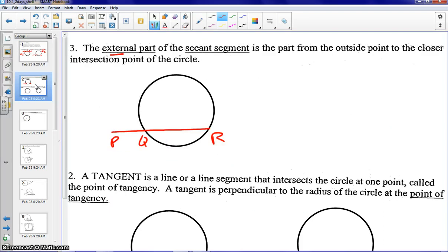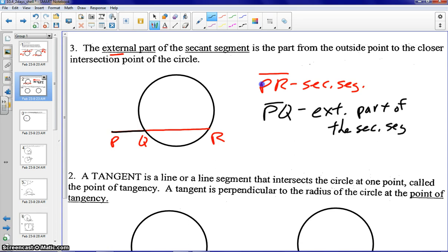The next example, we're going to skip two for a minute and jump over to three. We're talking about a secant, but we're talking about the external part of the secant. So using our exact same example that we just had, yes, PR is our secant segment, but now we have the external portion, which would be PQ. So the external part of the secant segment. Again, that goes from the outside point to the intersection point of the circle.